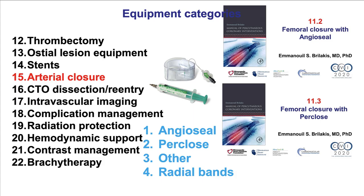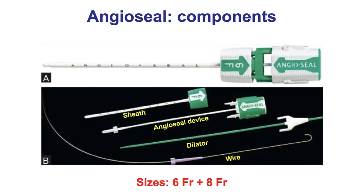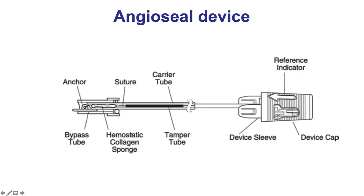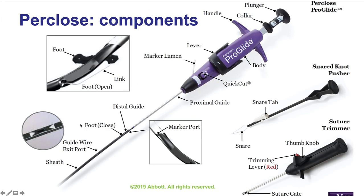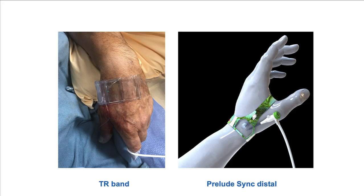Category number 15 are devices used for arterial closure. There are the AngioSeal and the Perclose for femoral access, discussed in separate videos, as well as various other closure devices. For radial access, there are various radial bands to achieve hemostasis. The AngioSeal system has a device with an anchor that goes inside the vessel and a collagen plug on the outside of the vessel. The Perclose delivers a suture around the arteriotomy site achieving hemostasis. There are now specific devices for distal radial access such as the Prelude Sync Distal.